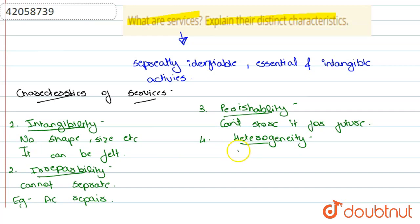Fourth is heterogeneity, so you can't standardize any service quality and there are no identical services. For example, we go to a restaurant, so there are two different waiters, two different services, so they are not identical, they are different from each other. So you can write, can't standardize quality and not identical.